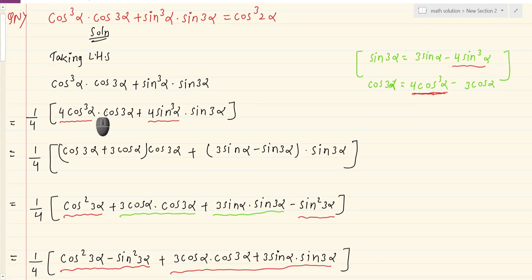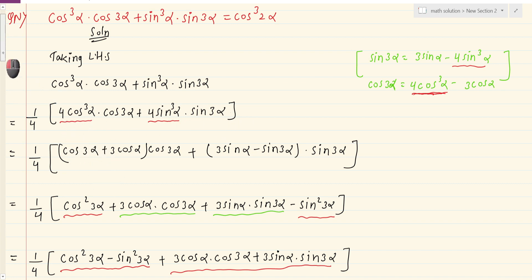I gathered the 1 by 4 factor in the 12th step and multiplied it through. This is a key technique in this proof.